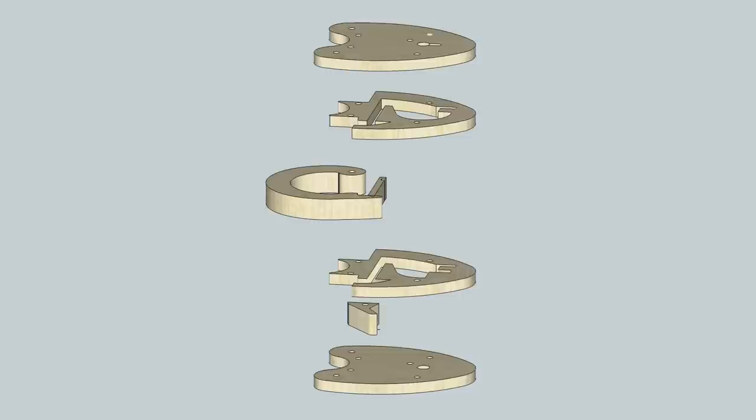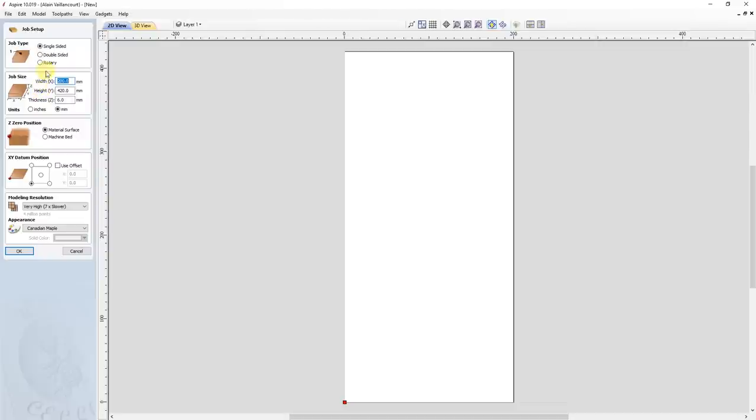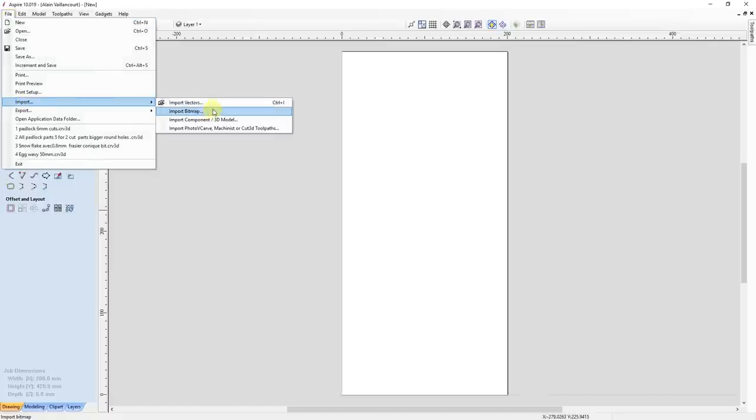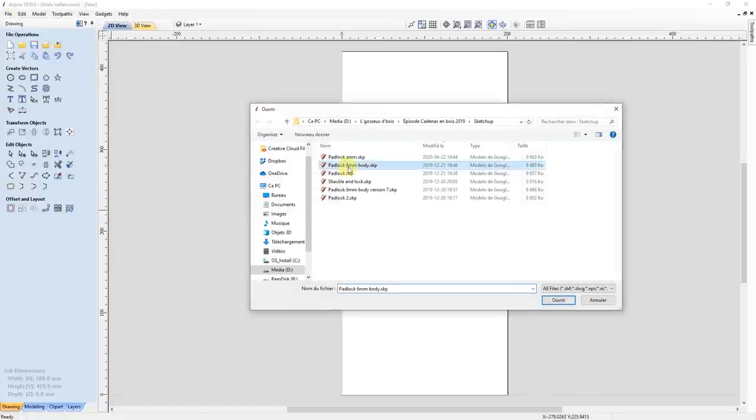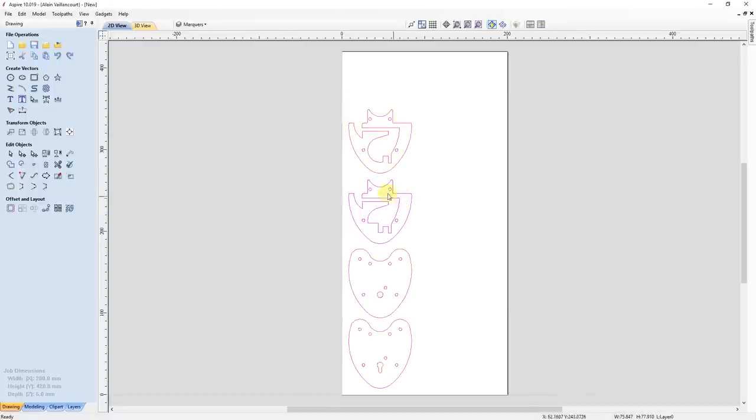So, after saving two SketchUp files for both plywood thicknesses, I'm able to make the CNC files with Aspire. For the main parts, since it's the same thickness as my other padlock, I'm going to use the same dimensions as my first one. After importing the SketchUp file, I have four tiers on top of each other. The first thing I have to do is flip this tier.